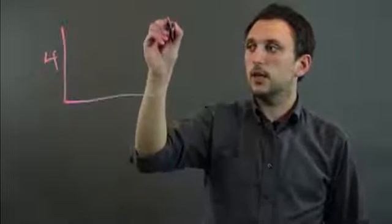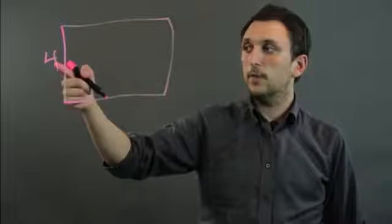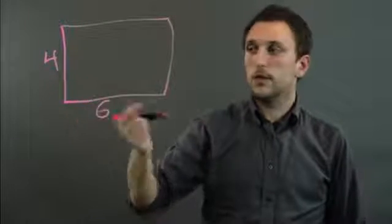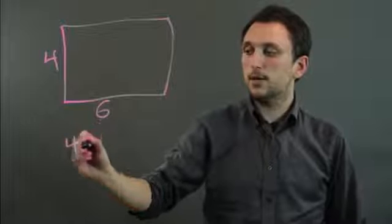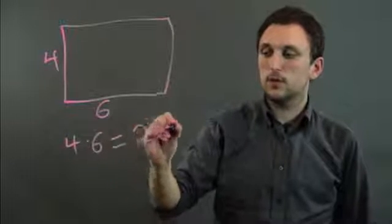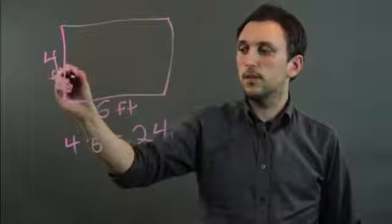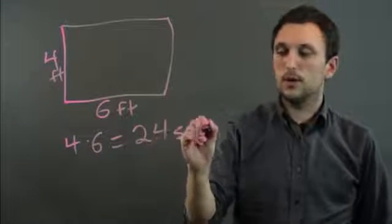But if we then have a large area, like a rectangular space, and we have four by six, then we would multiply four times six equals 24. And if this is feet and this is feet, then it's 24 square feet.